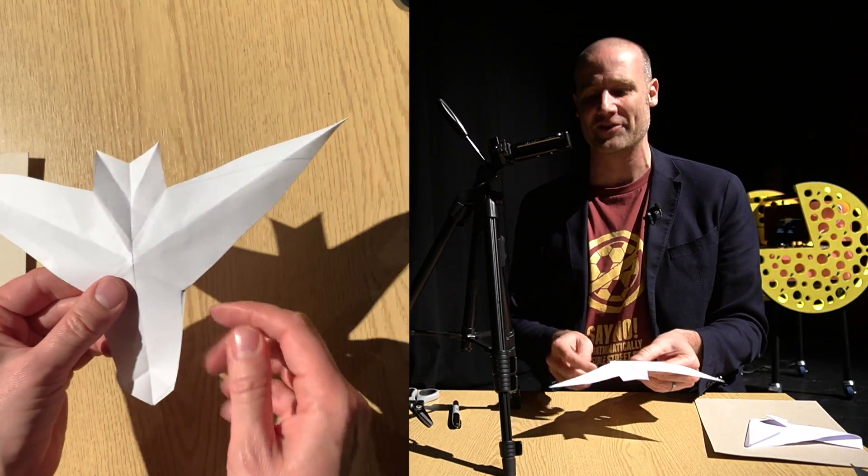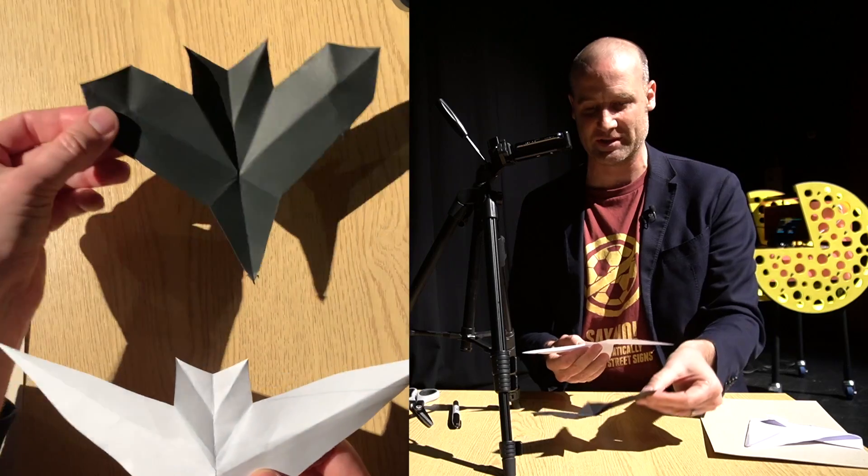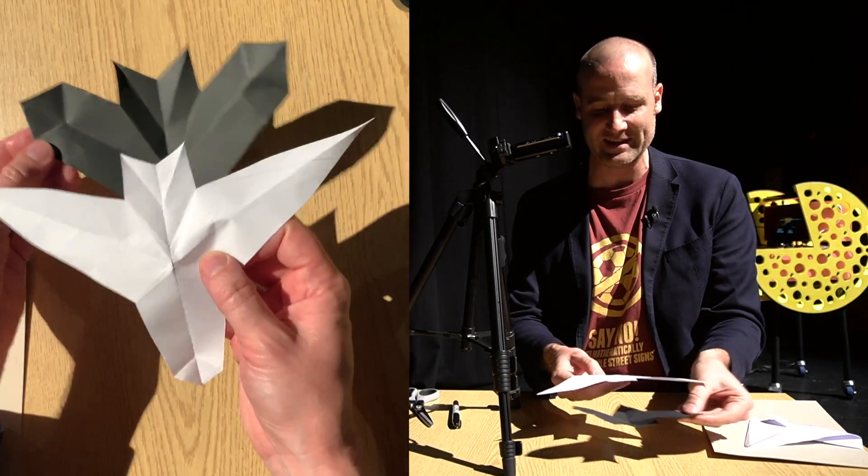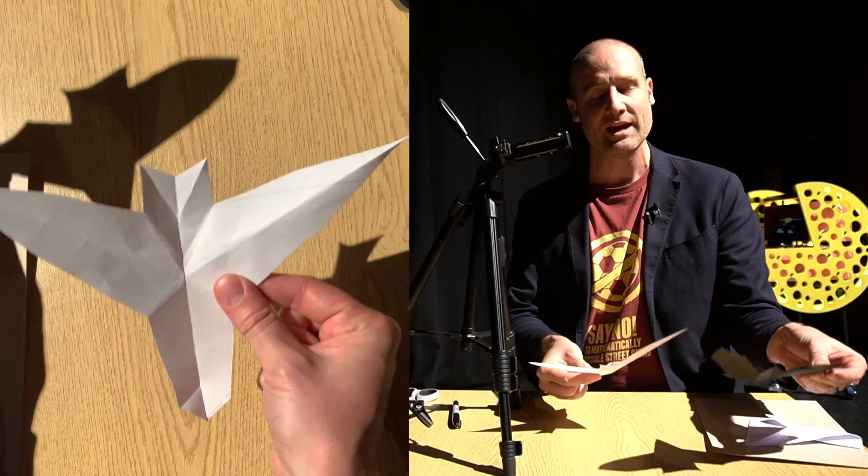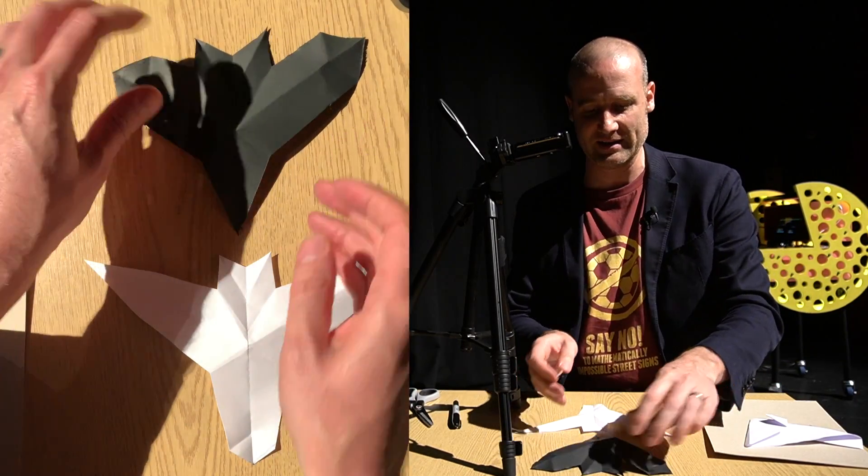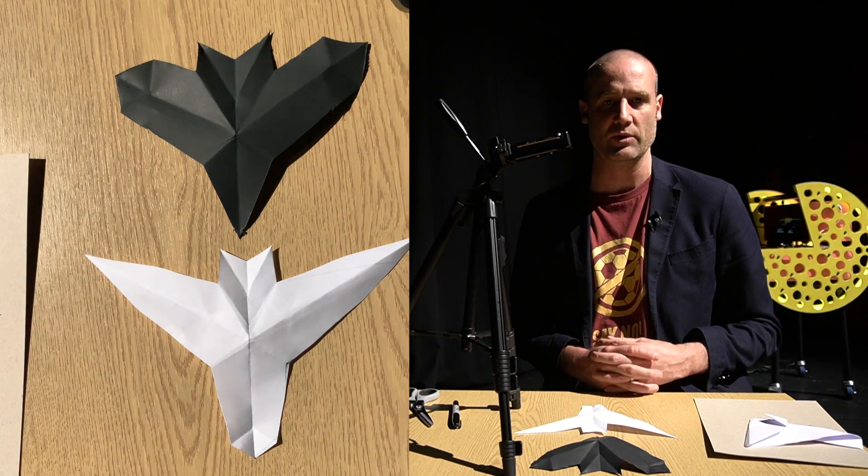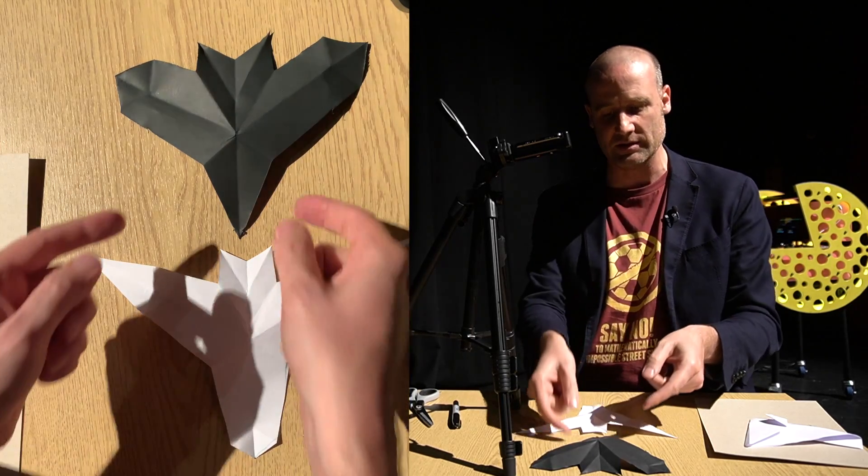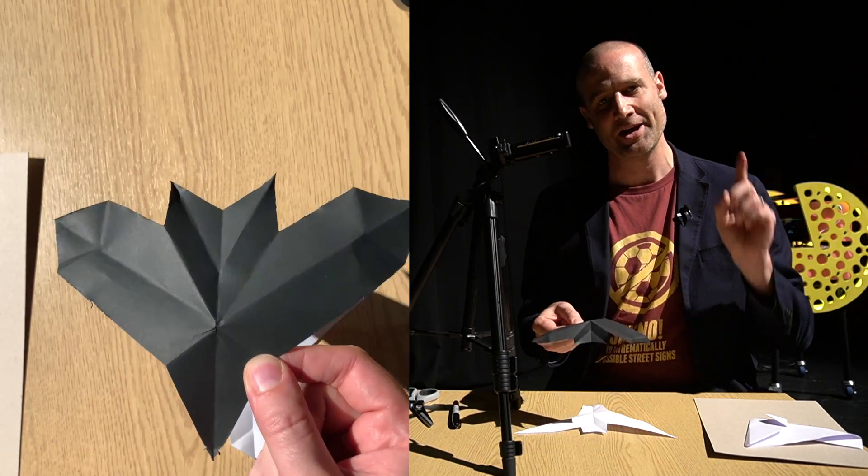So this time I've got pointy wings as opposed to before I had like the wings with a bit on the end and it's a different body. Okay, so your challenge is see if you can find a better fold and cut bat than any of the ones I've come up with. I will put the directions for my original bat below.